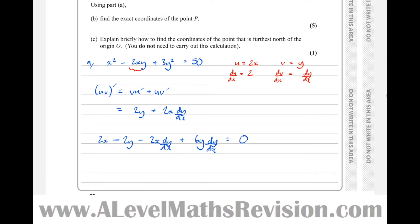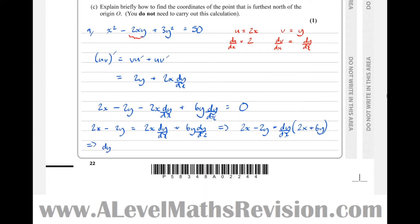Now gather up all the dy by dx terms on one side. So I get 2x minus 2y equals, let's take the dy by dx terms to the other side, 2x dy by dx plus 6y dy by dx. That's 2x minus 2y equals, take out dy by dx as a factor to get 2x plus 6y. Therefore dy by dx equals 2x minus 2y over 2x plus 6y. Both top and bottom divide by 2 to get x minus y over x plus 3y.